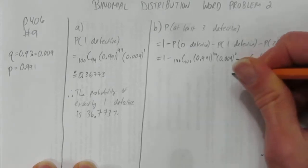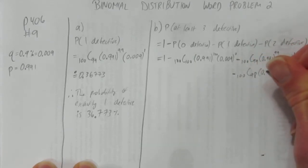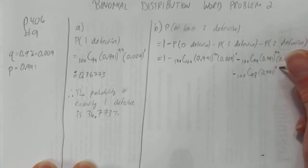And then for the 2 defective of your 100 computer chips, choose 98 of them to be effective, so that's 0.991 to the power of 98, and then your defective rate of 0.009 happens twice.